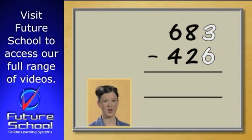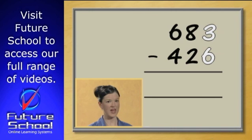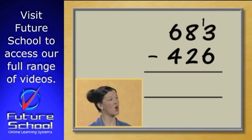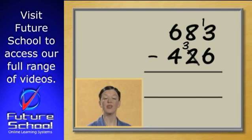In the units column, 3 take away 6. We can't do that, so we need to trade from the tens column. We give a 10 to the number at the top of the units column, and we add on a 10 in the tens column to the bottom number. In this case, the number 2 will become 3.